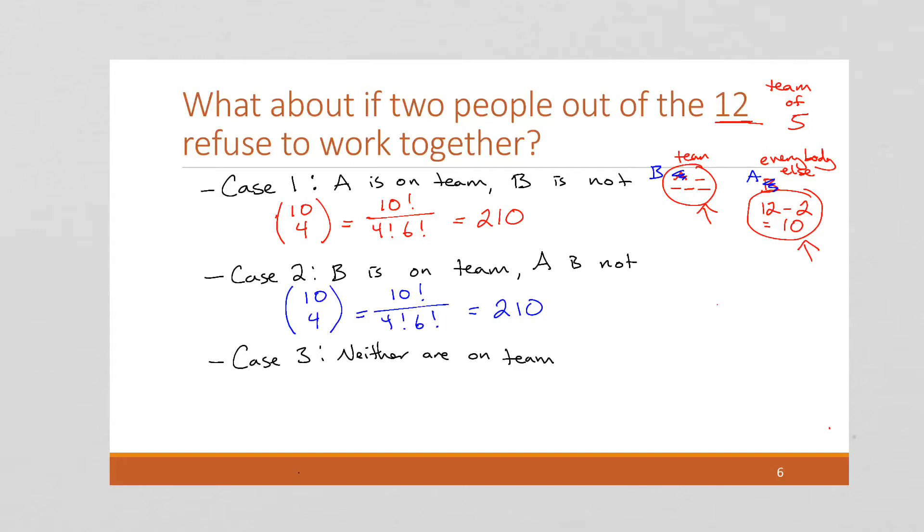And then finally, the scenario where neither one of them are on the team. We have our team, we have everybody else. And neither are on the team. So A and B are sitting down here. There's 5 spots in the team. And there's 10 people, excluding A and B. So this one is going to be 10 choose 5. Because these two are already spoken for. They're not going on the team. There's only 10 people left to pick from. This is going to be 10 factorial divided by 5 factorial times 5 factorial, which is going to be 252.